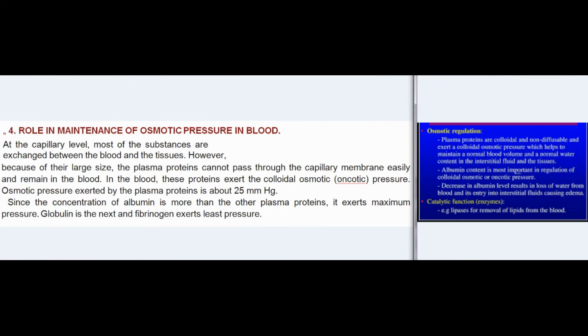Alpha and beta globulins play an important role in the transport of metals in the blood. (4) Role in maintenance of osmotic pressure — At the capillary level, most substances are exchanged between blood and tissues.